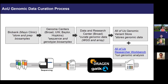The data are then sent to the data and research center at Broad to extract the variants and do some quality control. The variants are stored in the All of Us genomic variant store, but researchers will not interact with it directly. We provide common formats of genomic data in the research workbench together with some pre-installed tools. In the future, we will consider making the genomic variant store public for researchers.